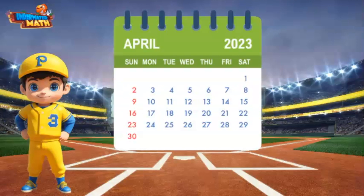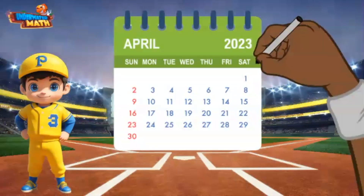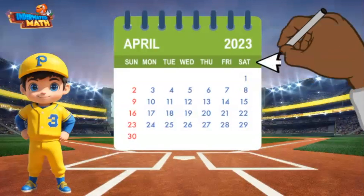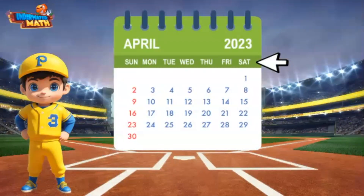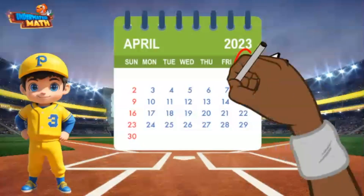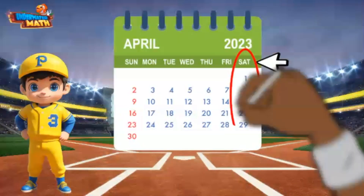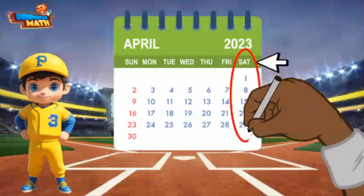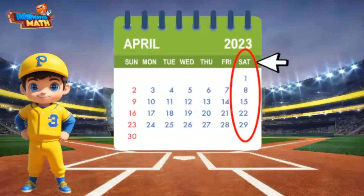First, I will find Saturday on the top of the calendar. There it is. Then I look straight down the Saturday column to see all the dates that will be Saturdays in April. I will circle them in red.